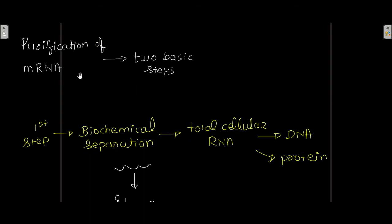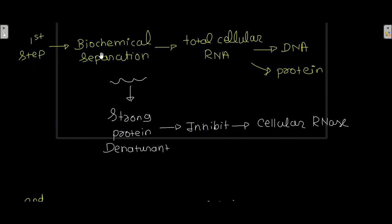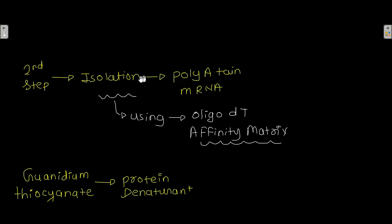The purification of mRNA involves two steps. The first step is the biochemical separation of total cellular RNA from DNA and protein using a strong protein denaturant that inhibits cellular RNases. The second step is the isolation of poly-A tail mRNA using an oligo-dT affinity matrix.